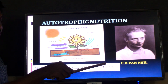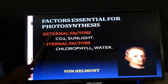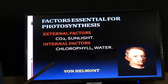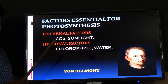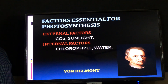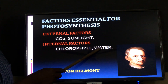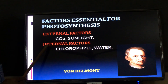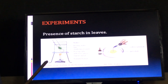External factors for photosynthesis are CO2 and sunlight; internal factors are chlorophyll and water. The scientist Van Helmont described the importance of water to plants. He described how water increases the mass of the plant. Van Helmont discovered the importance of one of the internal factors — water — to plants.